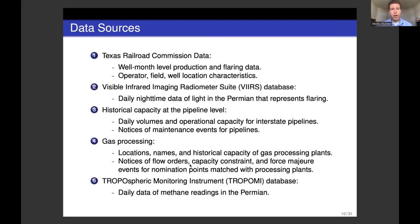Our analysis makes use of five data sources. The most prominent is the Texas Railroad Commission data, containing well-month-level oil production, natural gas production and flaring, operator characteristics, and well location characteristics. We also use the Visible Infrared Imaging Radiometer Suite (VIIRS) database, which contains daily nighttime light data processed to represent flaring. We use historical capacity at the pipeline level — daily volumes and operational capacity for interstate pipelines with notices of major maintenance events. We incorporate gas processing data including locations and historical capacity of processing plants, and we use the Tropospheric Monitoring Instrument (TROPOMI) satellite database for daily methane readings over the Permian.